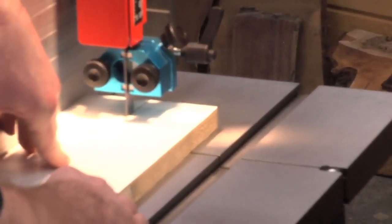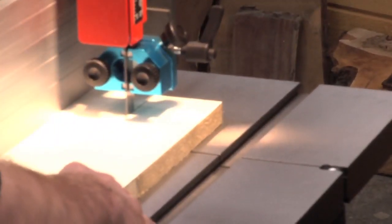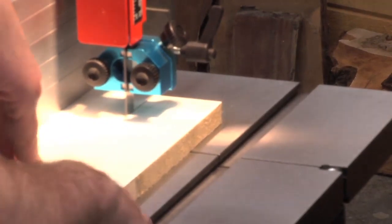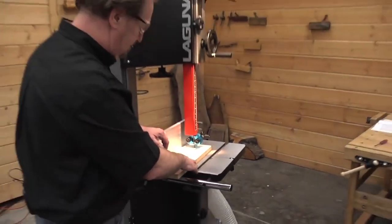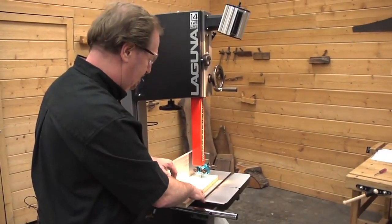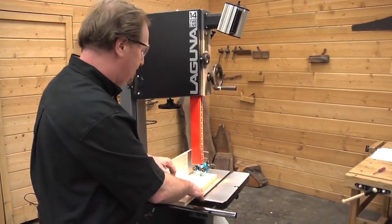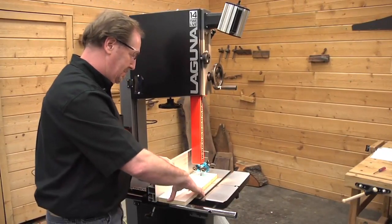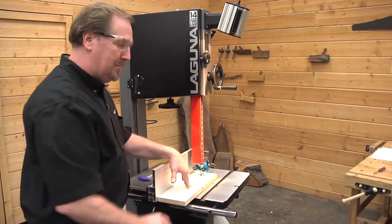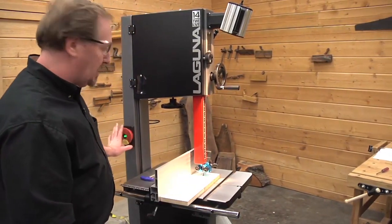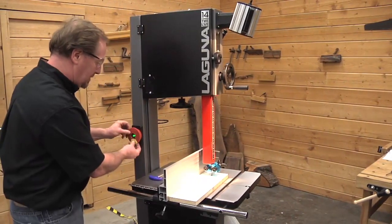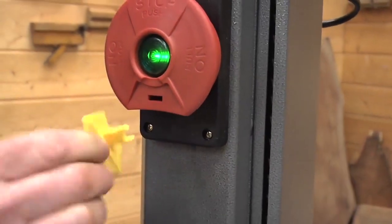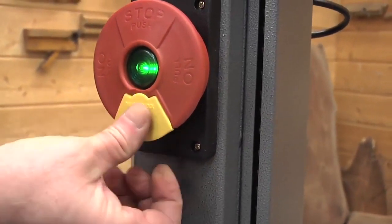Now we're going to shut off the saw and let it come to a stop. Shutting off the saw is simply a matter of pushing the switch in. One quick note on the switch: you can actually lock this out if you have kids in your shop by removing the little yellow tab from the front.